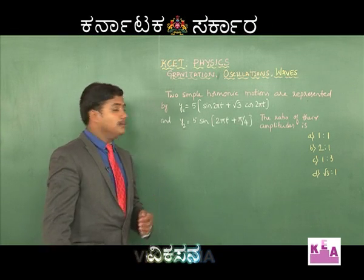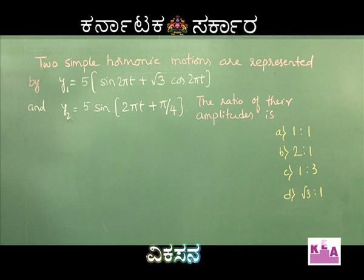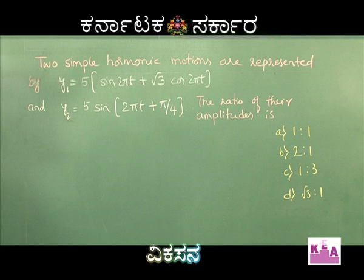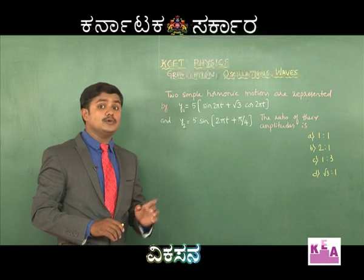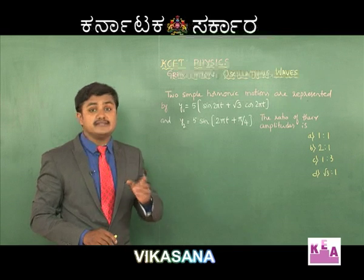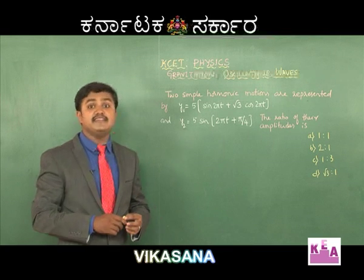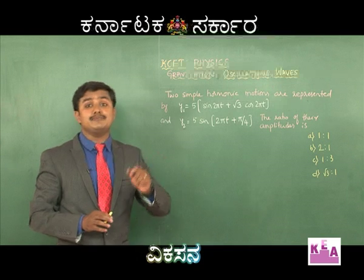Let us have a look at the problem. Two simple harmonic motions are represented by y1 = 5(sin 2pi t + root 3 cos 2pi t) and y2 = 5 sin(2pi t + pi/4). The ratio of their amplitudes is: (a) 1:1, (b) 2:1, (c) 1:3, and (d) root 3 :1. We need to know the displacement equation of a particle executing SHM: y = A sin(omega t + phi).